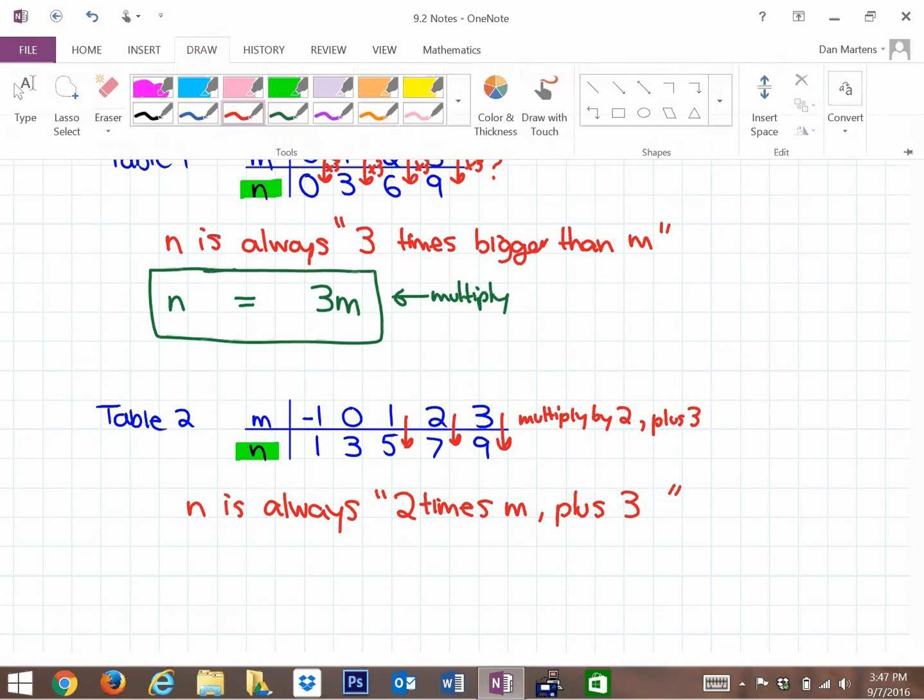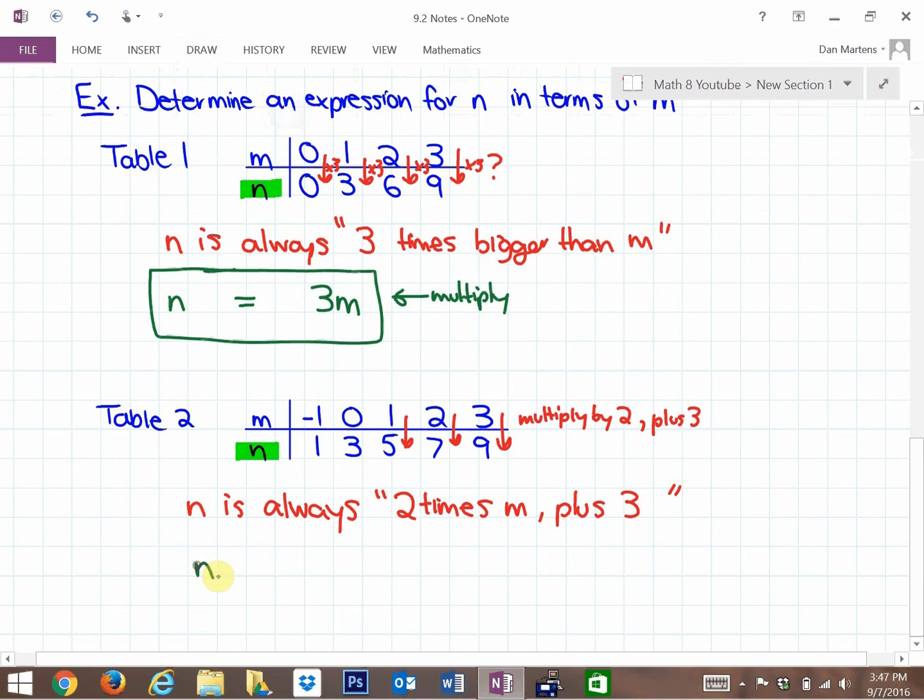So n is always 2 times m plus 3. And the way that we write that mathematically is n is always 2 times m, so that's multiplication, and then plus 3. So that's the relationship or the expression for how n is related to m.